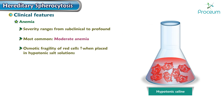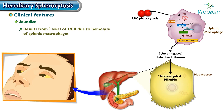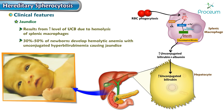Jaundice results from an increased level of unconjugated bilirubin, an end product of heme degradation due to hemolysis by splenic macrophages that have phagocytosed the spherocytes. About 30 to 50 percent of newborns with hereditary spherocytosis develop hemolytic anemia with unconjugated hyperbilirubinemia causing jaundice.